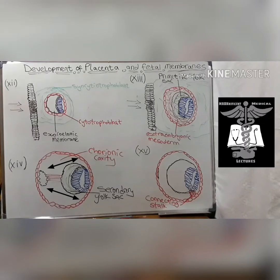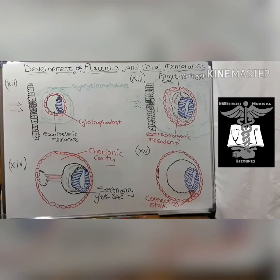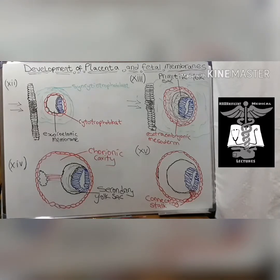At day 13, a large portion of the exocoelomic cavity is pinched off, forming the primary yolk sac by the end of week two. The chorionic cavity enlarges, and the embryonic disc is joined to the trophoblast by a band of extra-embryonic mesoderm called the connecting stalk, which is the future umbilical cord.